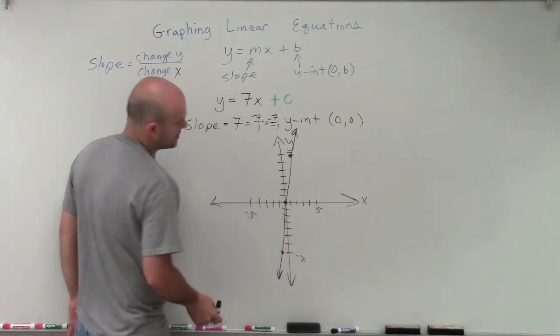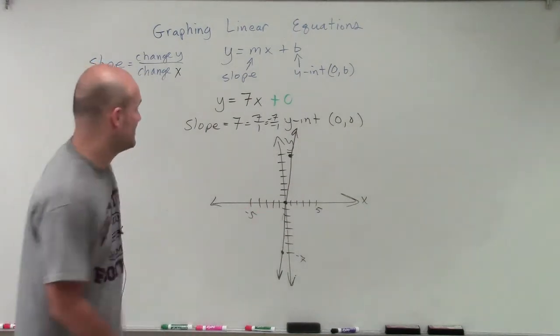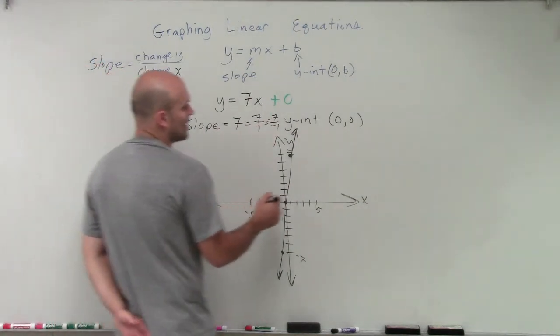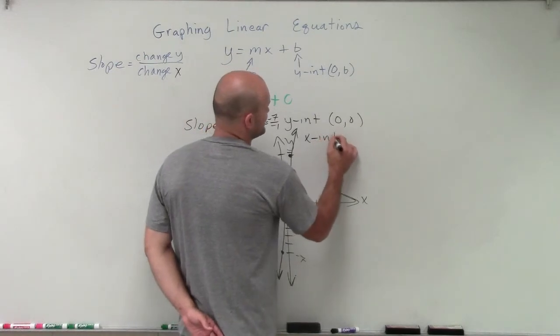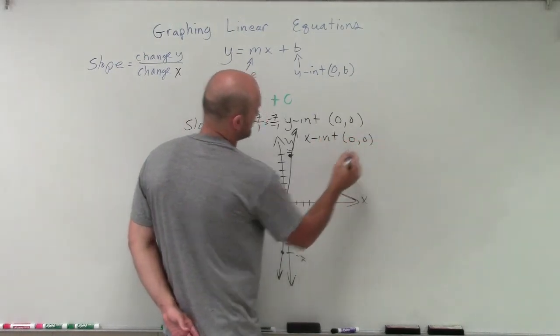And there you go, ladies and gentlemen. That is your graph, where you can see that the graph has a y-intercept at 0, 0, and also an x-intercept at 0, 0.